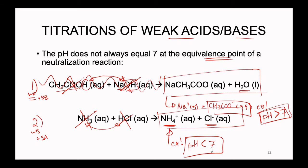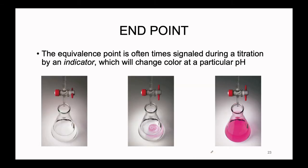If you are actually in the lab, what signals the end of a titration? We use chemical indicators. The equivalence point is often signaled by an indicator which changes color at a particular pH. The pH at which an indicator changes color is known as the end point — it signals the end of your titration. The indicator is placed in the flask with the acid, and as the base is added, a color change occurs.